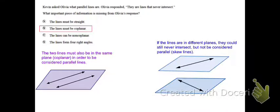Parallel lines never intersect, and they are also on the same plane, as you see here on the left in purple. When they're on the same plane, we say that they are coplanar.